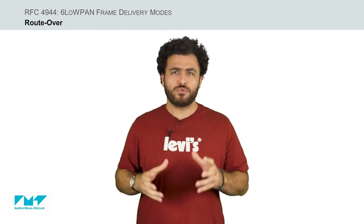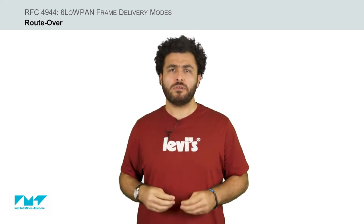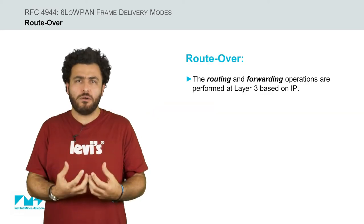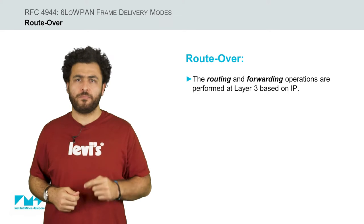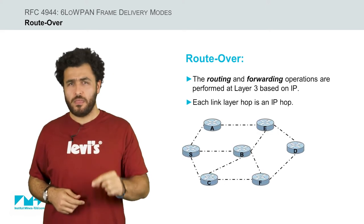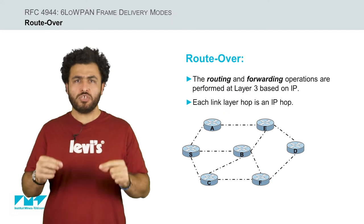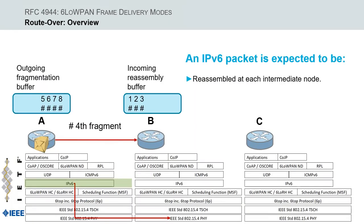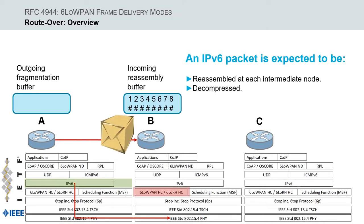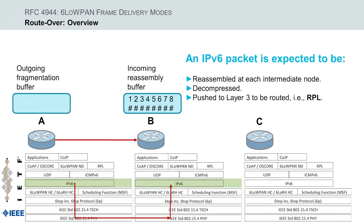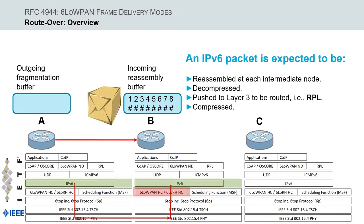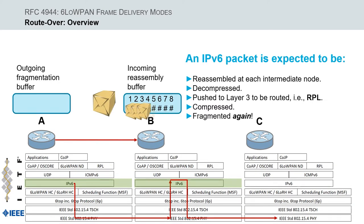The second approach is called the route over, or per-hop fragmentation and reassembly mode, where the routing and forwarding tasks are executed at the network layer — layer 3 — based on IP. Therefore, in route over, each link layer hop is an IP hop. In a route over 6LoWPAN network, the received fragments of the same IPv6 fragmented packet are expected to be first reassembled at each intermediate node, then decompressed to reconstruct the original IPv6 packet, pushed to layer 3 to be routed according to a routing protocol such as RPL (Ripple), and then compressed and fragmented again before being forwarded to the next hop.